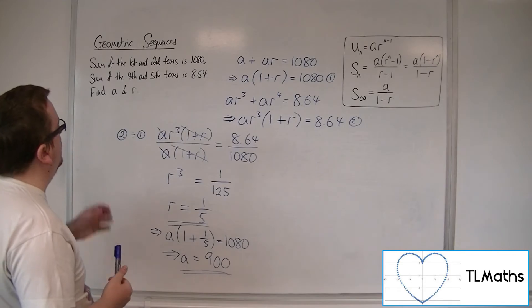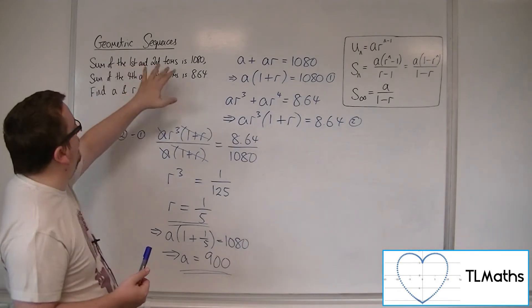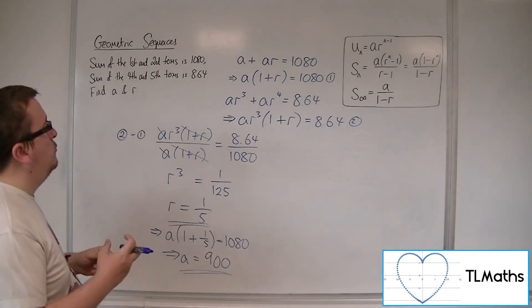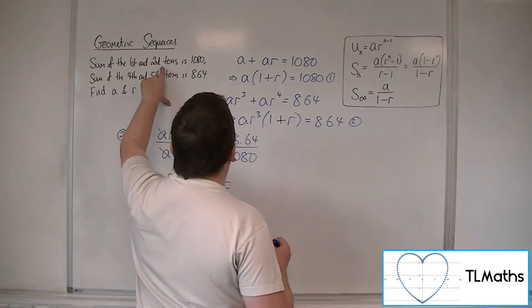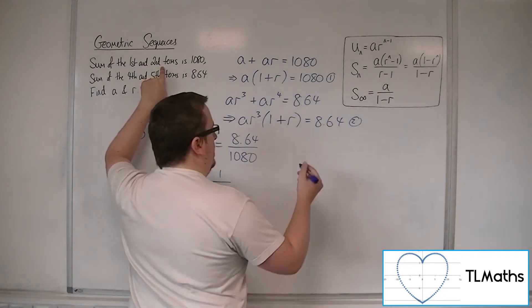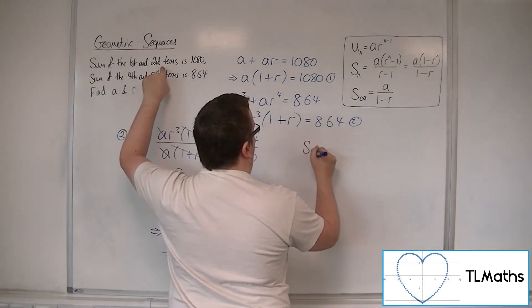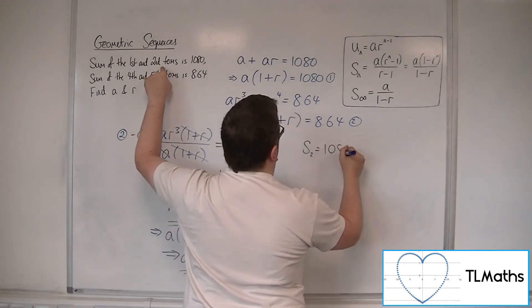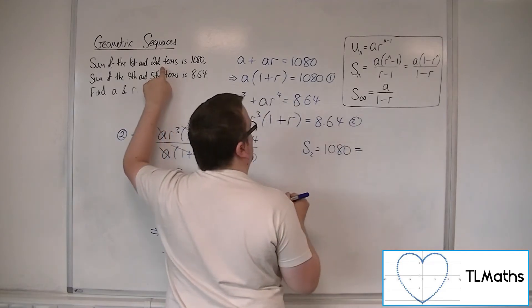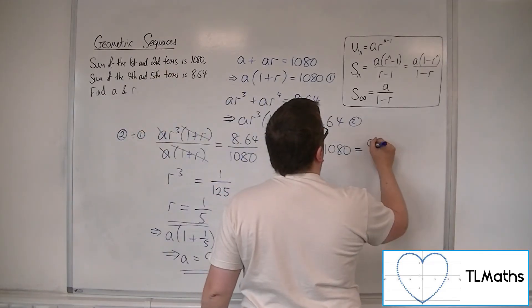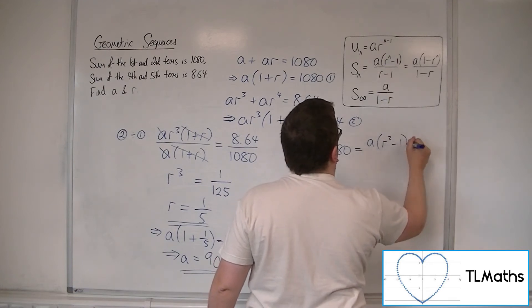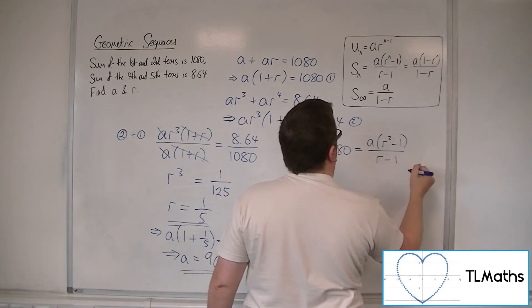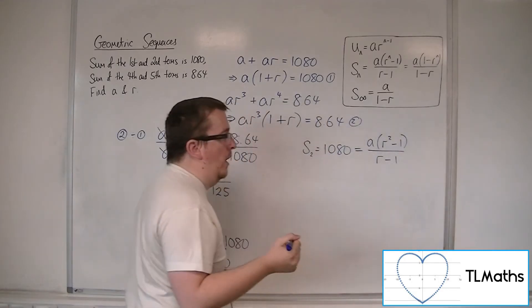I expect in a number of cases, for the first and second terms, we might automatically have gone to think, that's the sum of the first two terms. So that means that S2, which is 1080, will be equal to A times R squared minus 1 over R minus 1. That will be your equation 1.